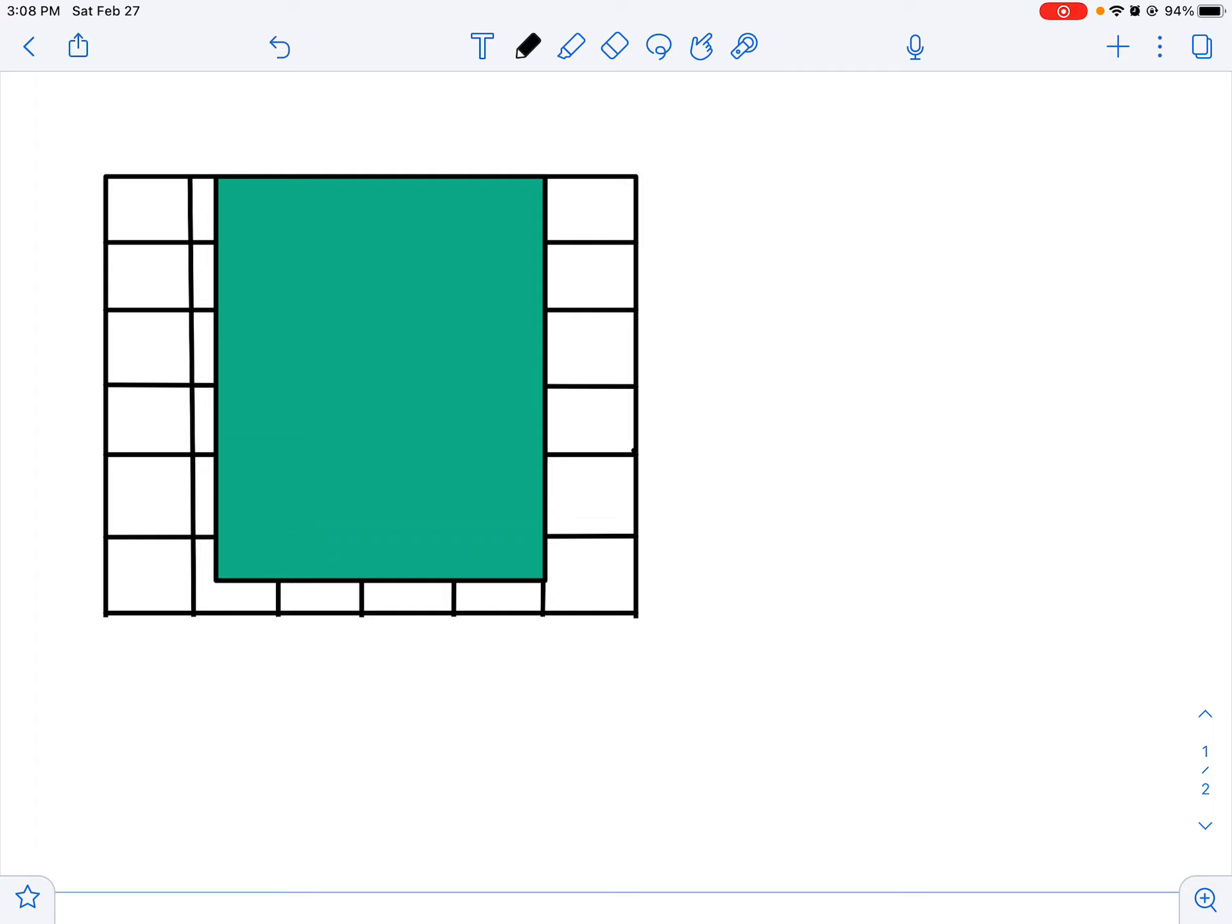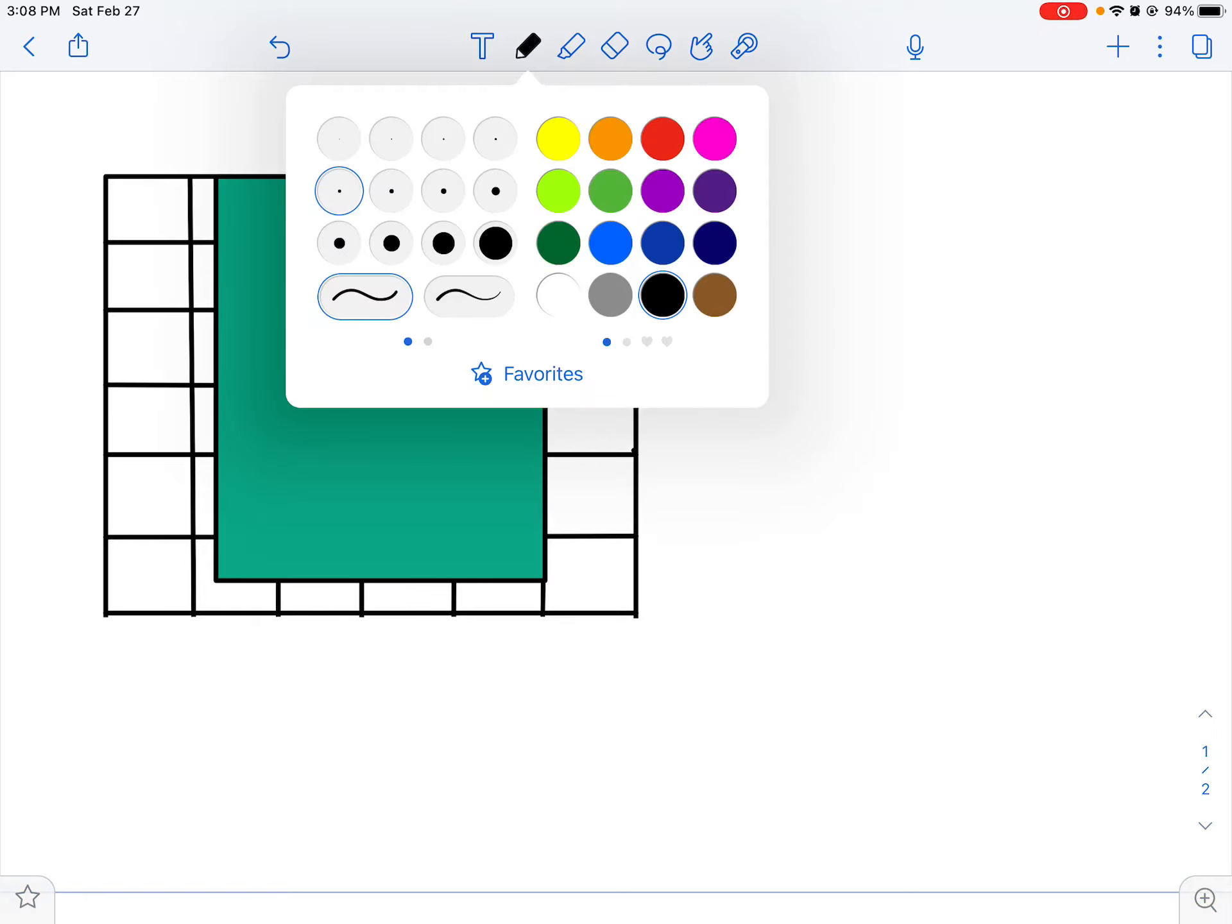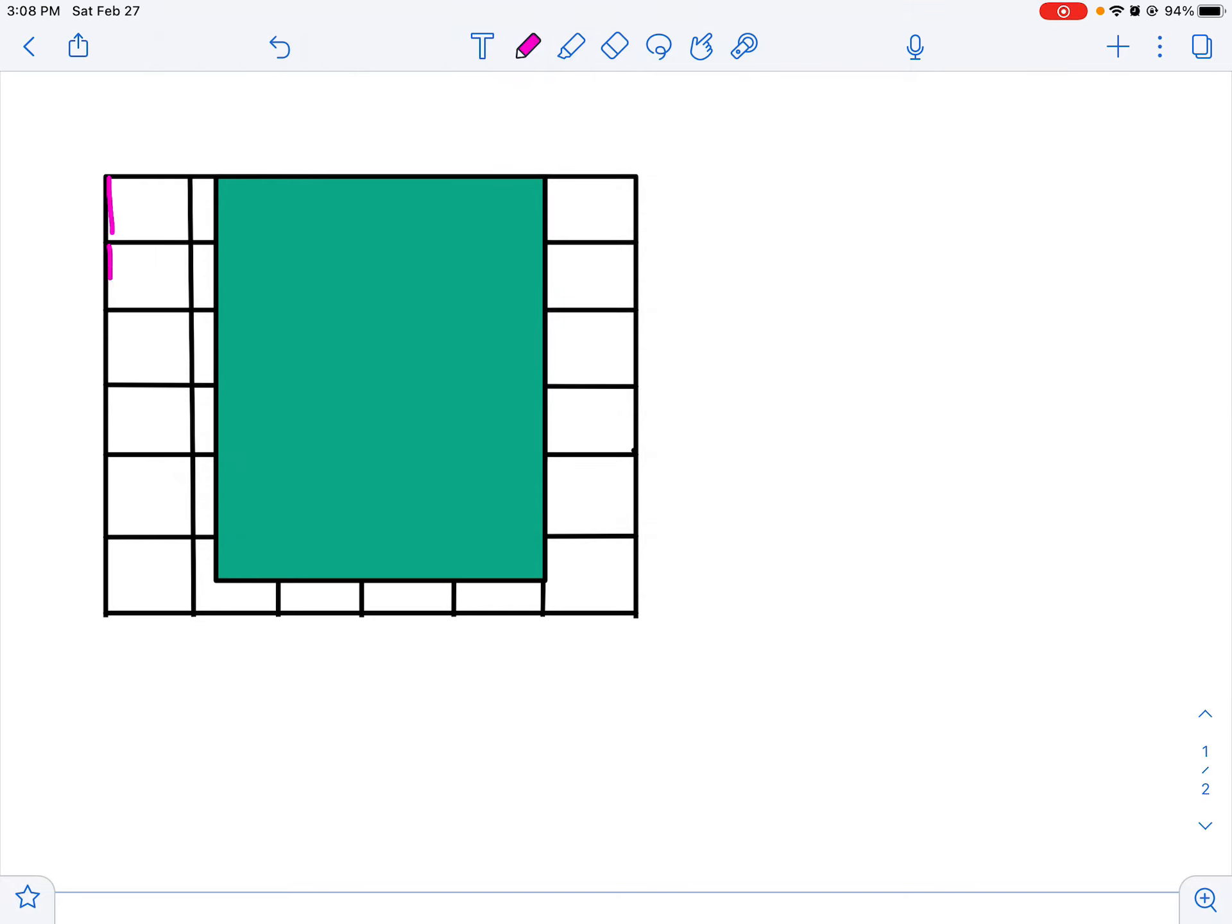I'm going to label my sides. I'm going to count my side lengths. Let's get a different color here: one, two, three, four, five, six. Since this is a living room, let's say this is six feet—six inches doesn't make sense for a living room floor. We know the side length is six feet.